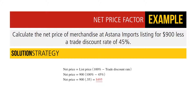Calculate the net price of merchandise listing for $900 with a trade discount rate of 45%. Using our one-step formula — net price equals list price times (100% minus trade discount rate) — we get $900 times (100% minus 45%), which is $900 times 0.55, giving us a net price of $495.